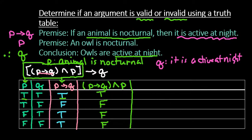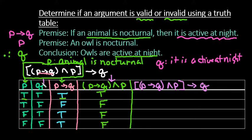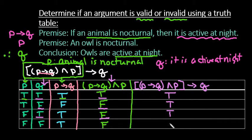Now we just need to do our final column. Our final column is: if P then Q, and P, then Q. So we're looking at the grouped column first, followed by the Q column. True and true leads to a true statement — remember, the then part is only false if we have true followed by false. Our second row: false and false, which is true. False and true, which is also true. False and false, which is also true.